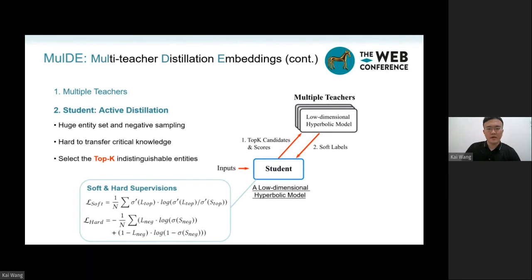Specifically, we employ a low-dimensional hyperbolic model as the student component, and two parts of loss are defined. The soft loss is a knowledge distillation loss,